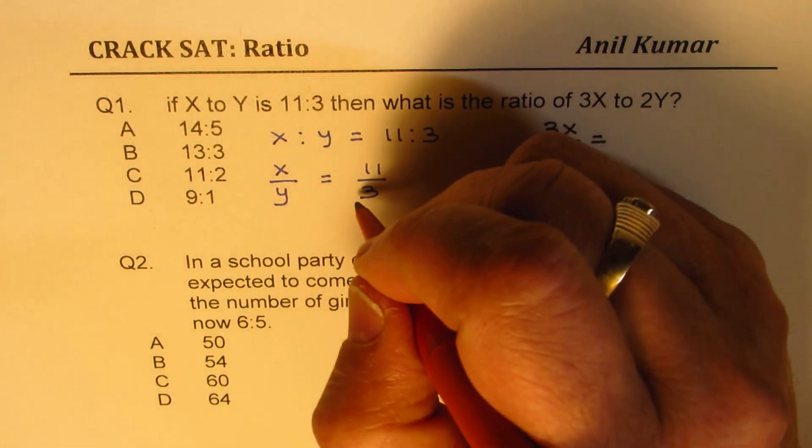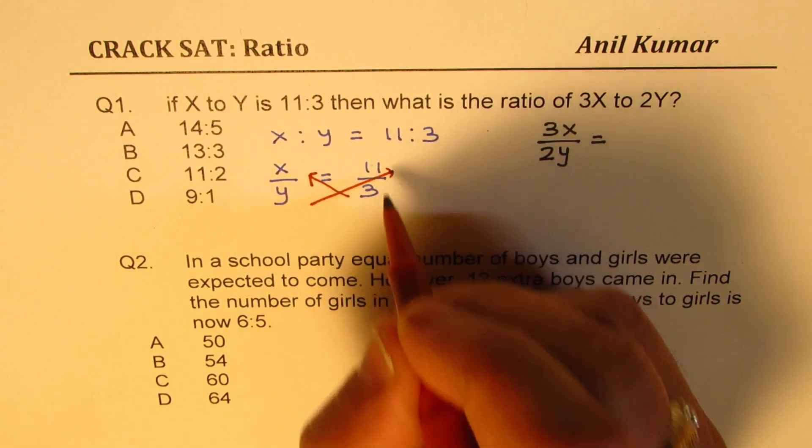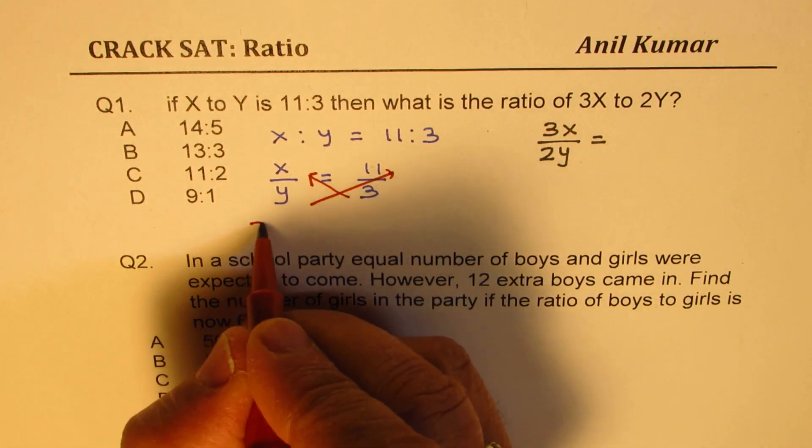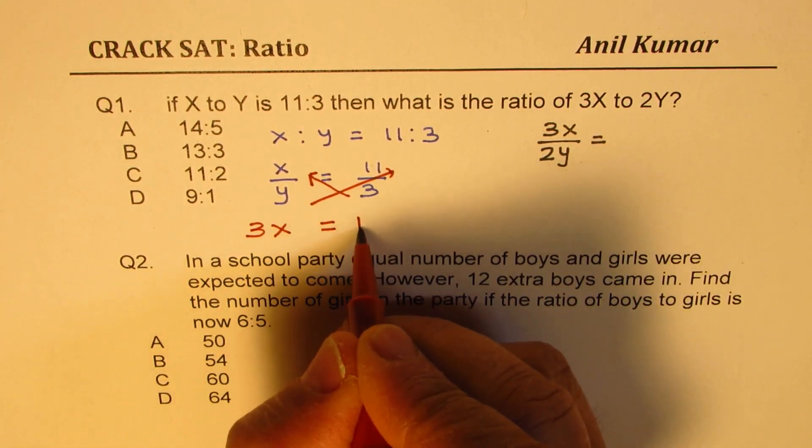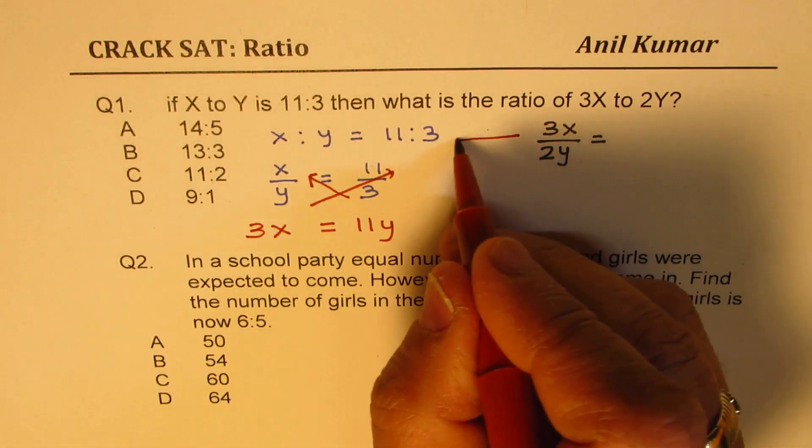That is to say, if I multiply X with 3 and 11 by Y, then we get 3X equals to 11Y, right? So I could make this substitution here.